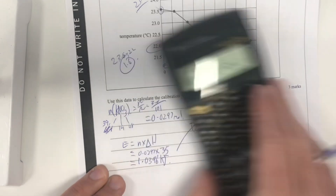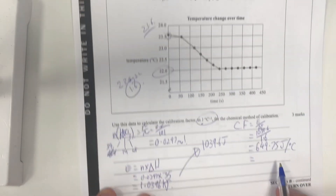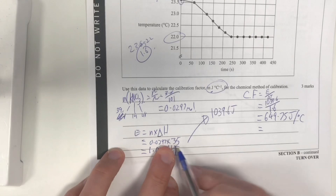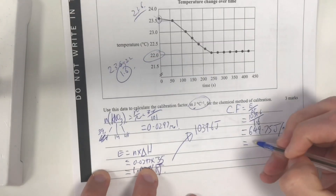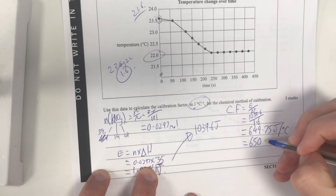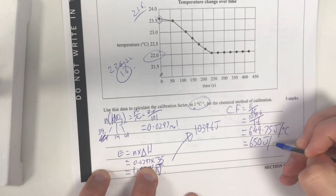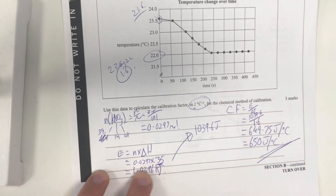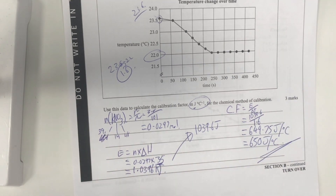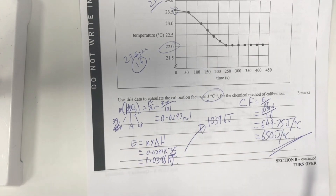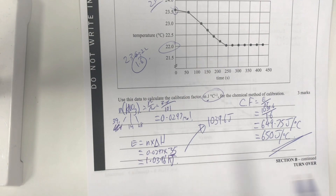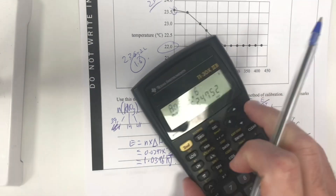Significant figures — delta H had two significant figures, so we round to 650 J·°C⁻¹. And that should be the final answer. With calculations, remember to write down everything you possibly can: all equations, what you're finding, and then do it all in a calculator afterwards.